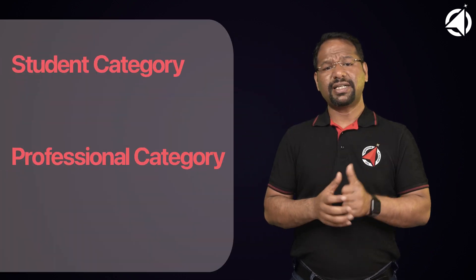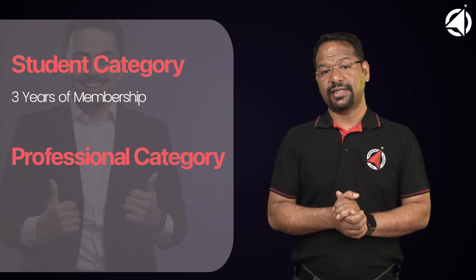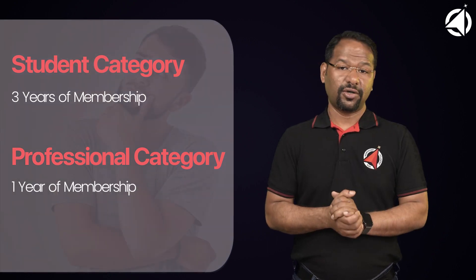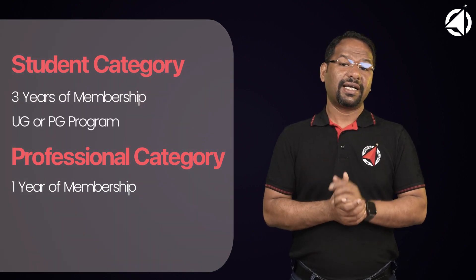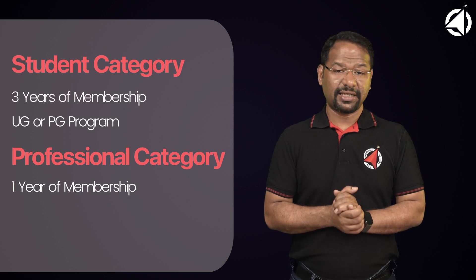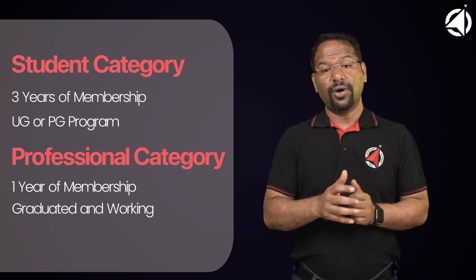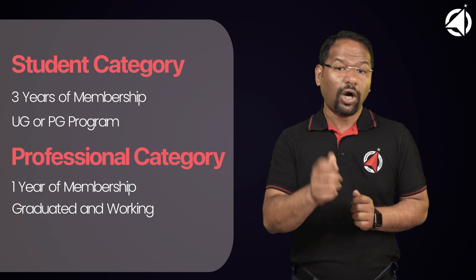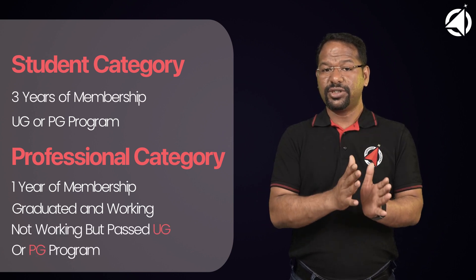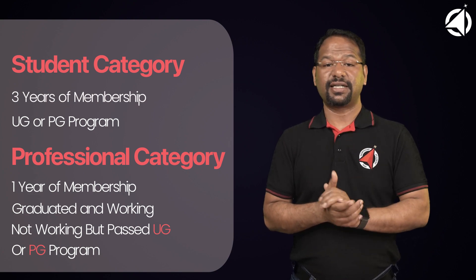Regarding the difference between student and professional category: the student category gets three years of membership whereas the professional category has just one year. Students currently pursuing a UG or PG program come under the student category membership, while students who have already graduated and are currently working come under the professional category. Remember, even if you are not working but have passed the UG or PG program, you will still come under the professional category.